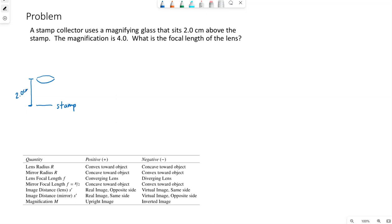The purpose of this magnifying glass, of course, is to make this image bigger. So we're looking down through this glass and we see a magnification of the stamp that is four. So the stamp now looks four times bigger.